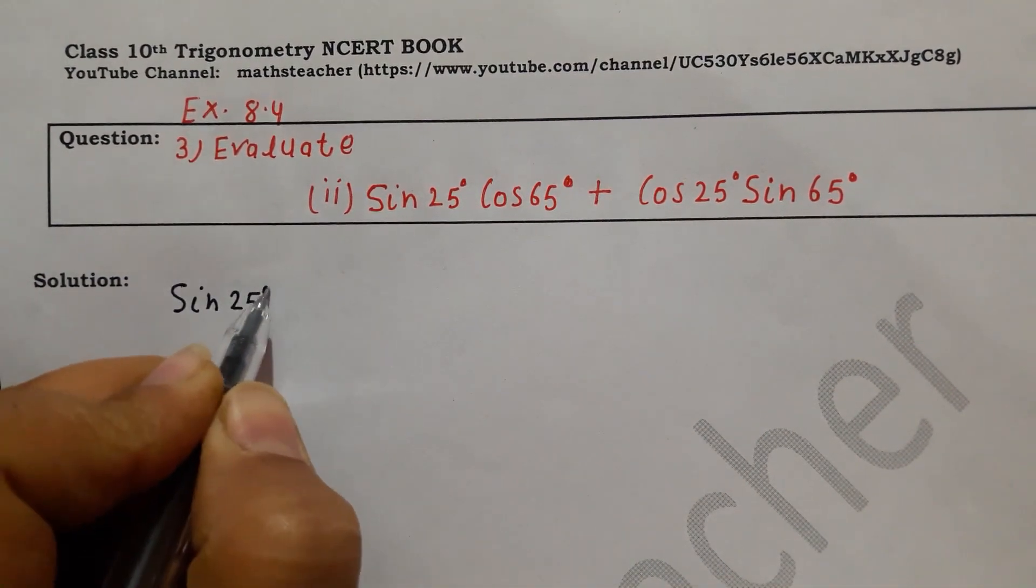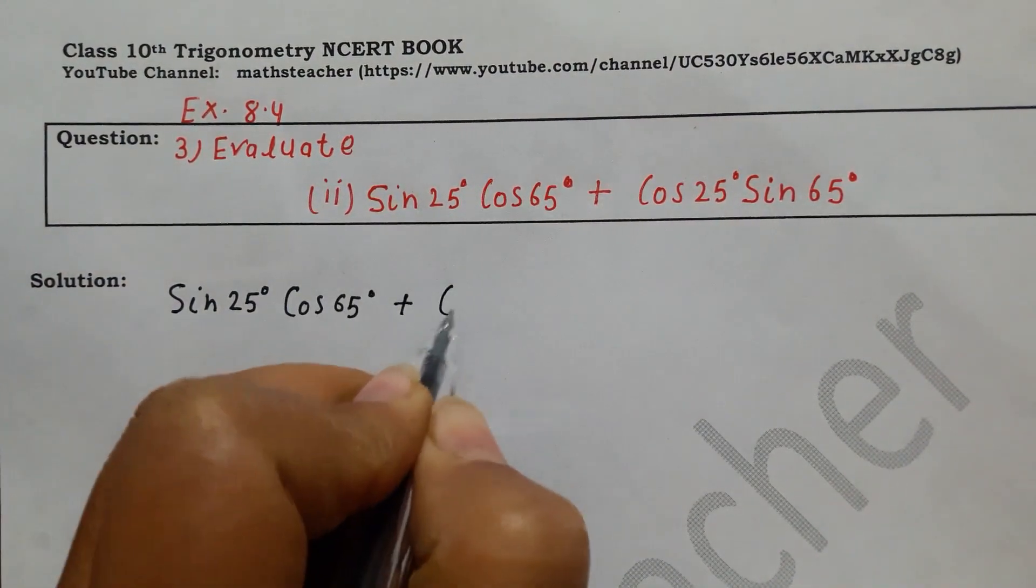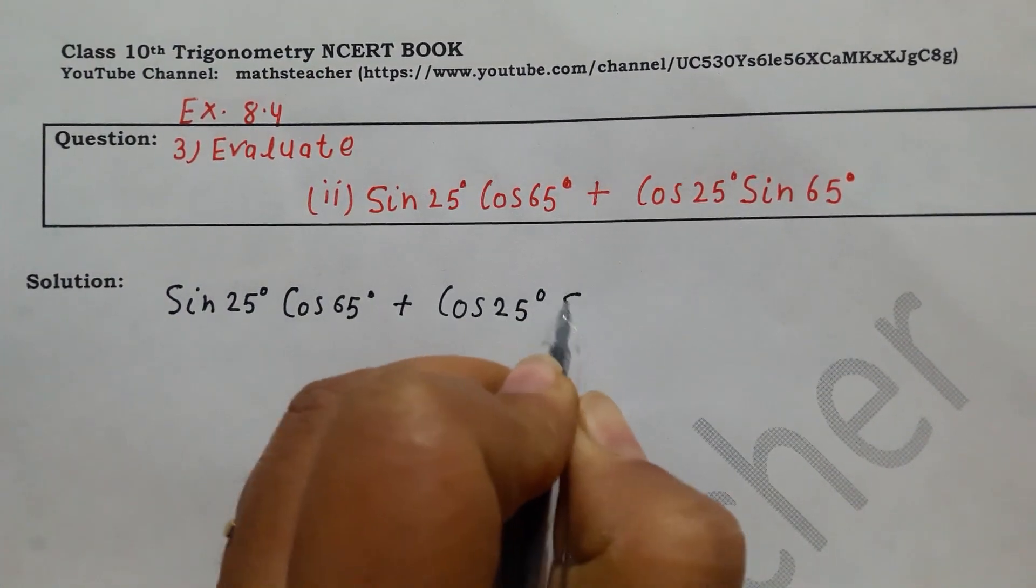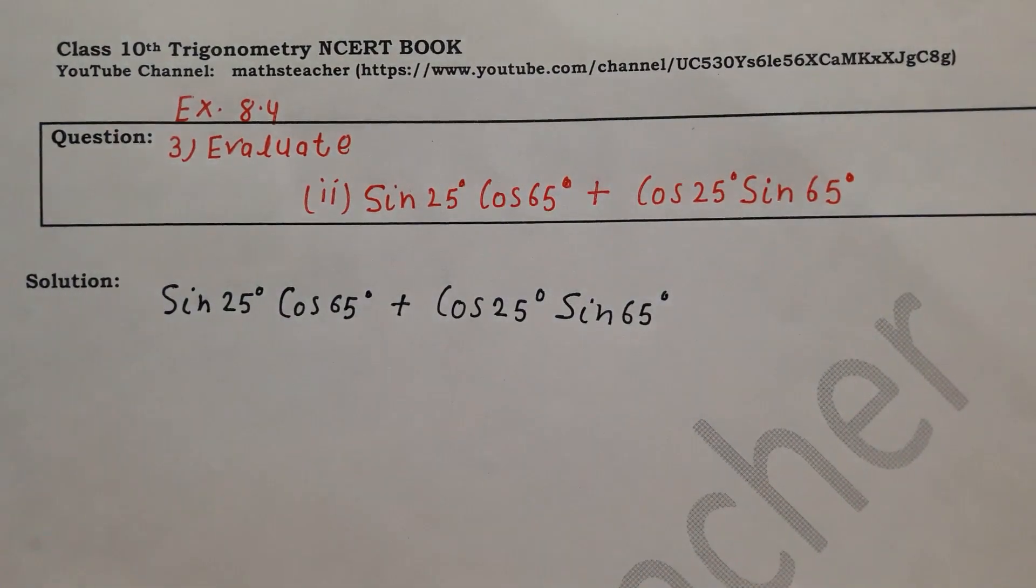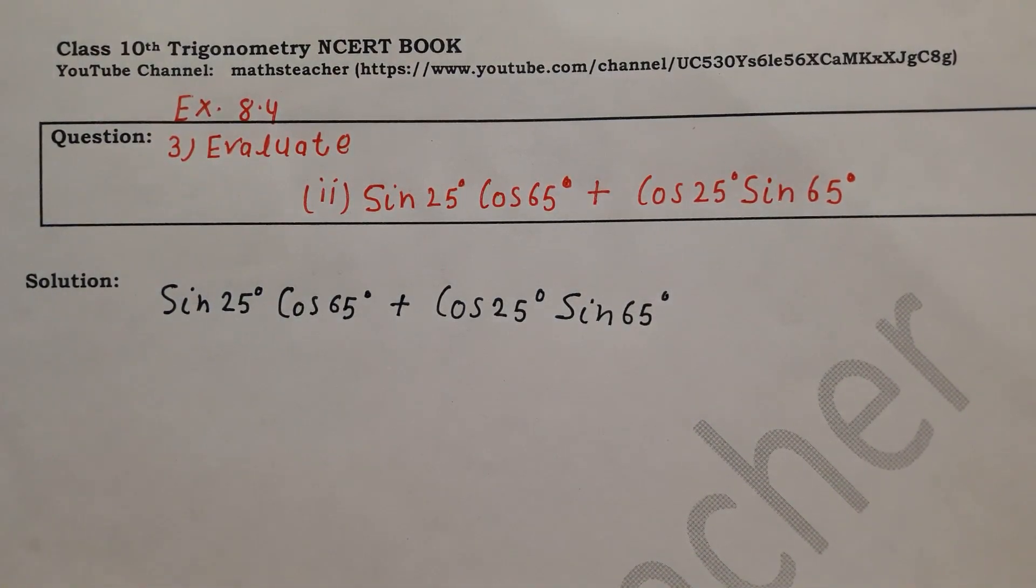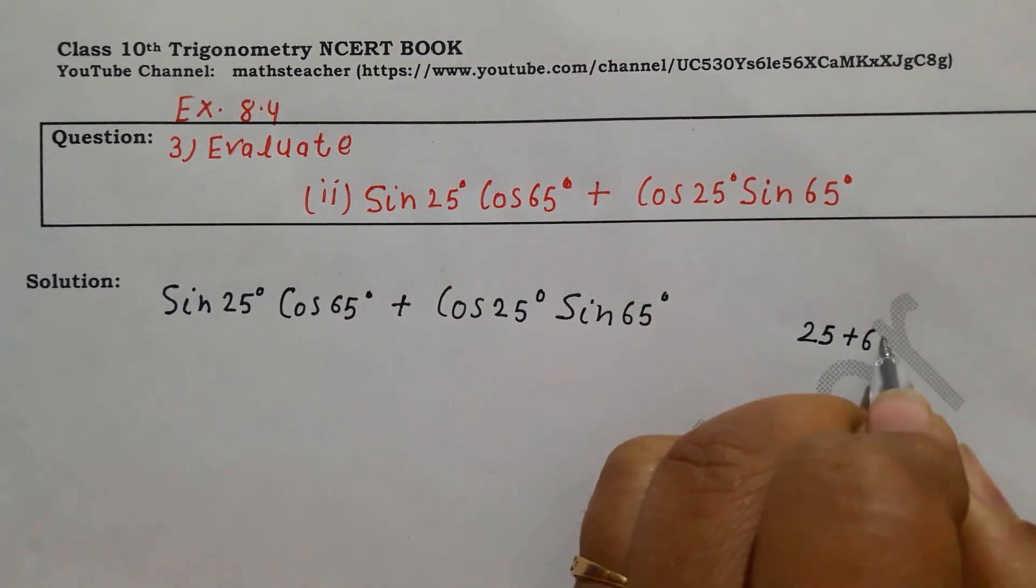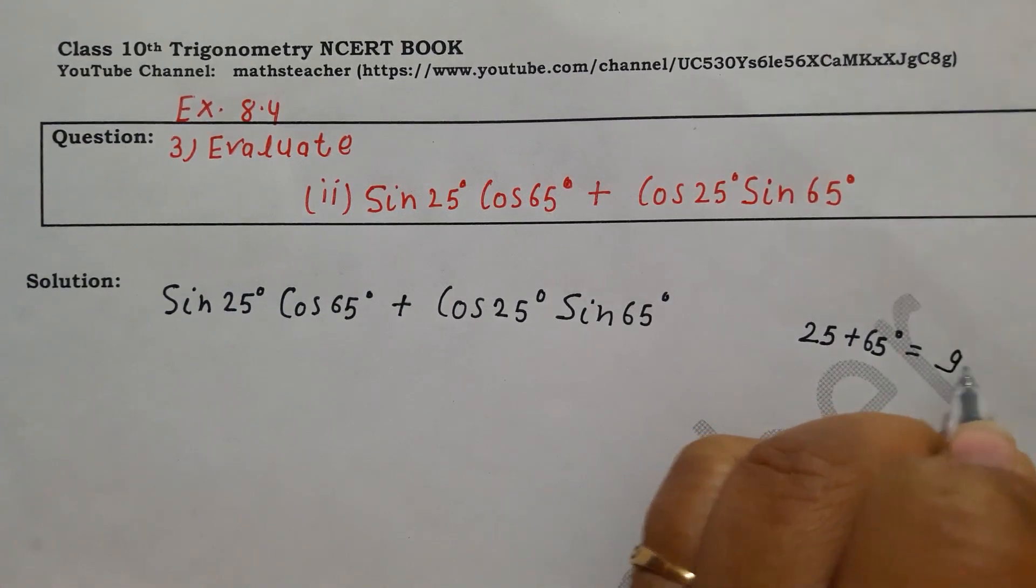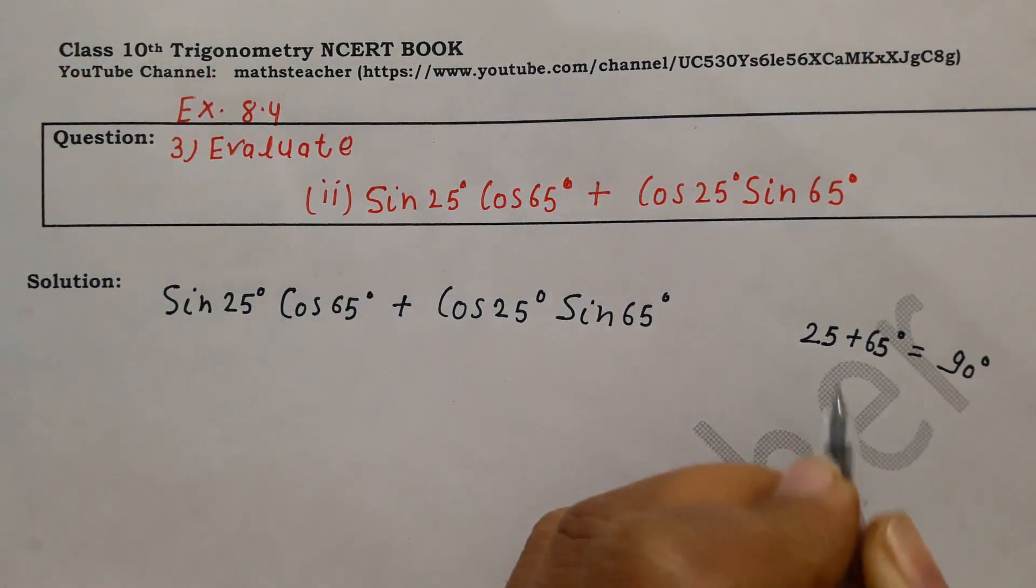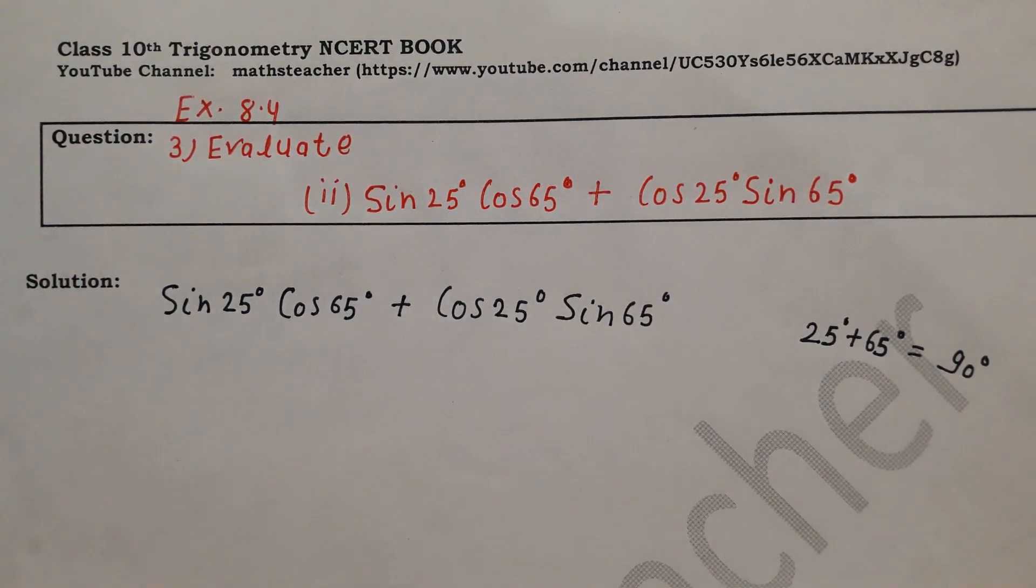Sin 25 degree into cos 65 degree plus cos 25 degree sin 65 degree. So here we see 25 plus 65 degree is 90 degree. How much of these two angles is 90? So when the sum of two angles is 90 degrees, what do we call it? Complementary angle.